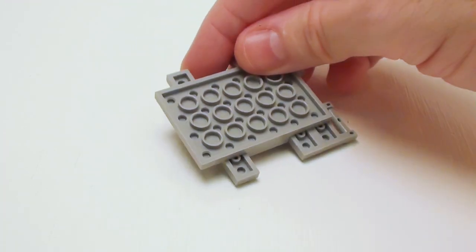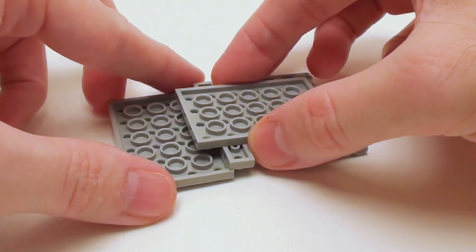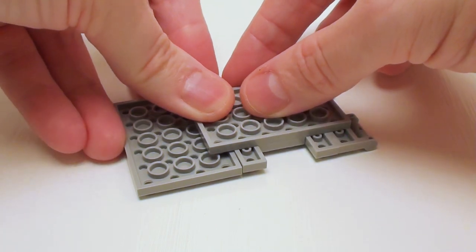Let's flip the assembly over. We're going to slide in a 4 by 6 plate in this area.